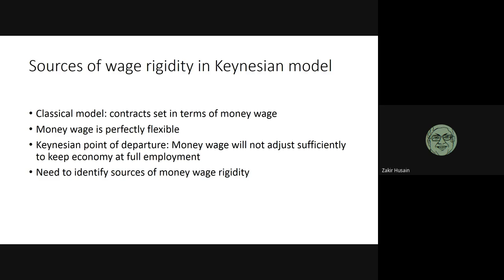In the classical model, the labor market had another characteristic: the money wage was perfectly flexible. So if you have unemployment, the money wage is going to go down so that demand goes up and unemployment will be eliminated. Similarly, if you have excess demand for labor, money wages will simply rise and the excess demand for labor is going to be eliminated. In the Keynesian case, however, this flexibility in the money wage is absent.